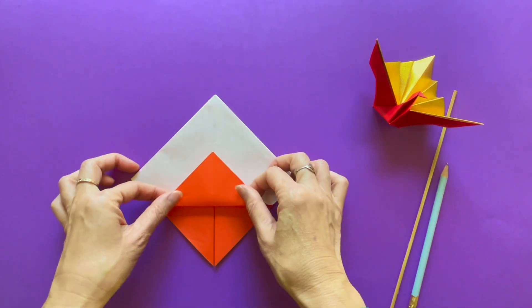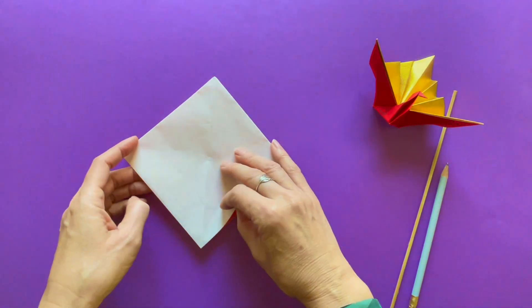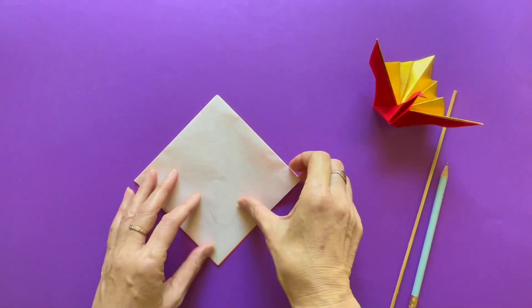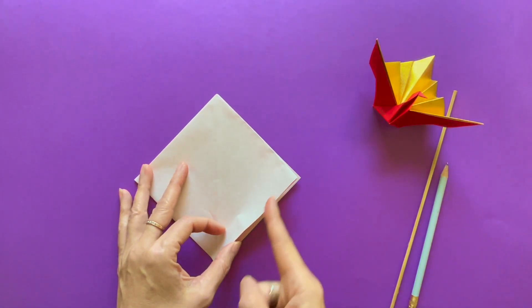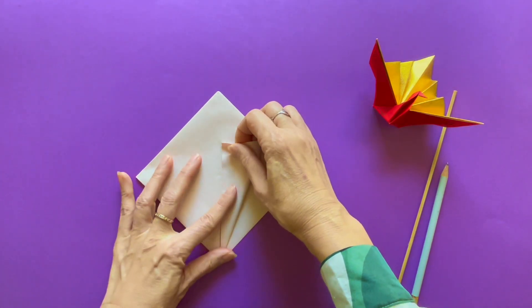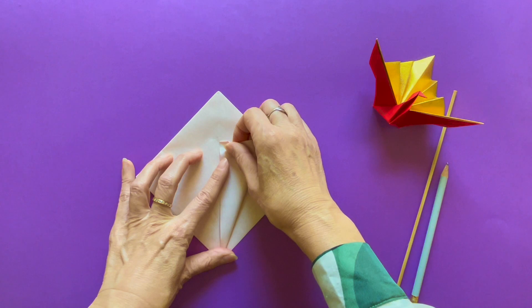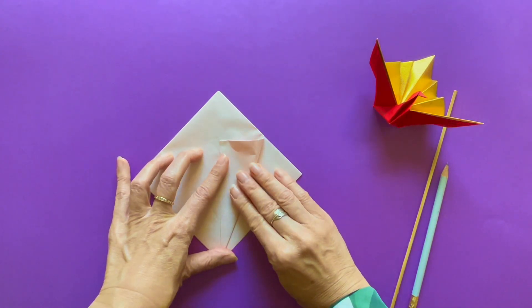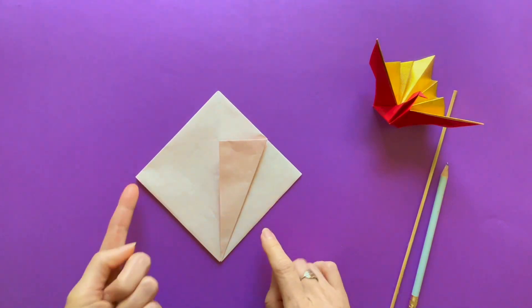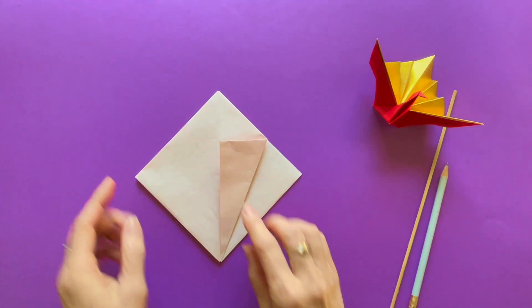Orientation to see the opening side on the bottom or towards you. And there's a center vertical creasing line there. Pick up only one layer from the right bottom diagonal edge and fold that to the vertical center crease. Do the same on the opposite side.